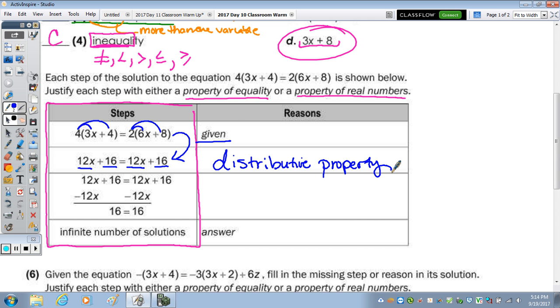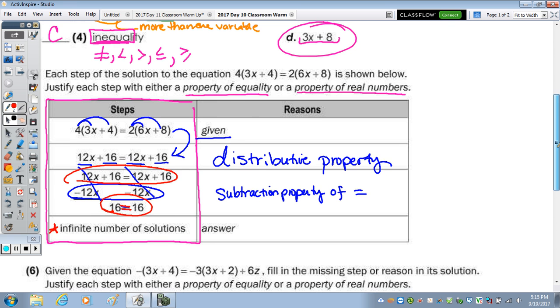Okay. And then in the next line, we are subtracting the 12X, and that is the subtraction property of equality. And as I mentioned, I'm ok with the of equals. And then we end up with the 12X is canceling out, and 16 equals 16. When it comes out to be a statement that is equal, so you have the same either expression on each side, such as right here, 12X plus 16 equals 12X plus 16. When you have the same expression, or if you get rid of the variable, and you have the same numbers, when they're the same, that means you have an infinite number of solutions. If they weren't equal, that would be no solution.